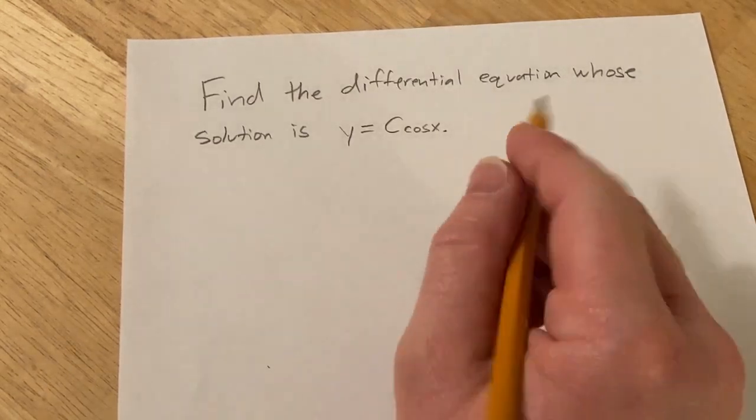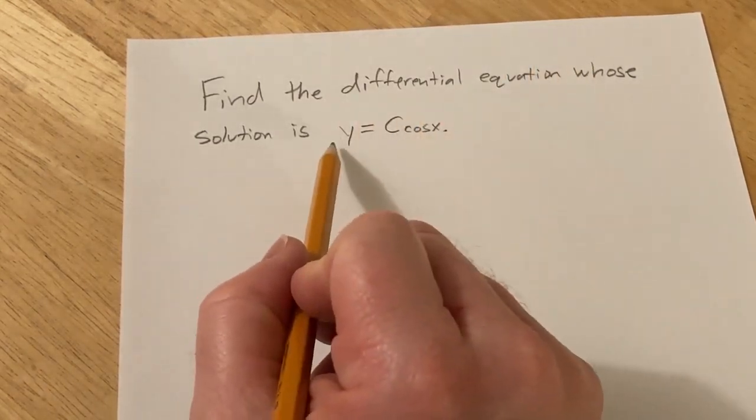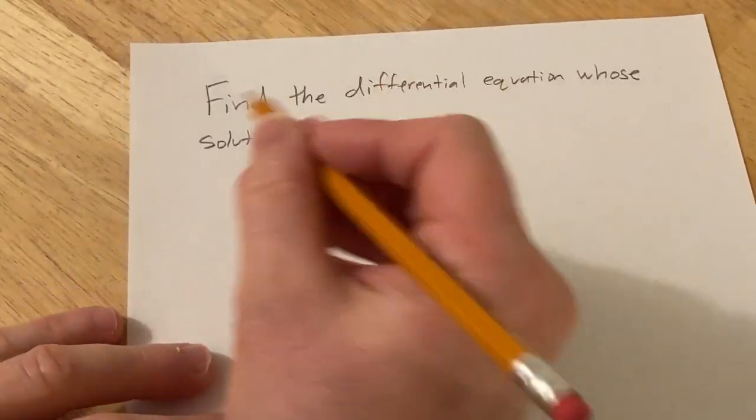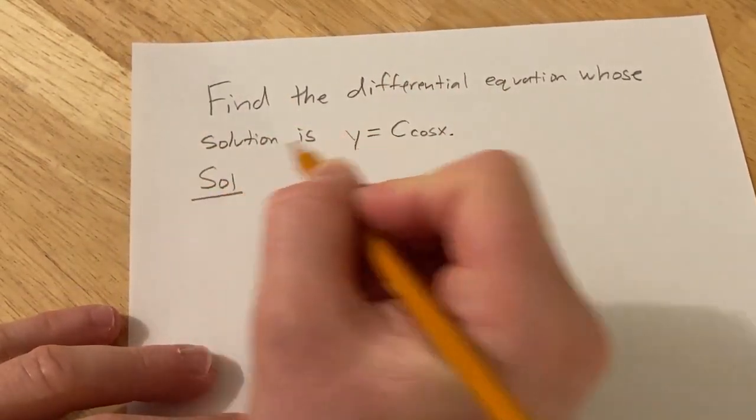Hi, in this problem we have to find the differential equation whose solution is given by y equals C times the cosine of x. Let's go ahead and try to work through this solution.